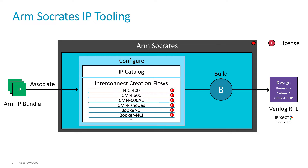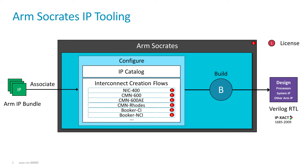If you want to configure an ARM IP, first you need to obtain its corresponding IP bundle and associate it with the IP catalog. This essentially means that you need to provide the location of the IP bundle to the tool so that it can run the necessary configuration scripts and access the different resources from the bundle during IP configuration.